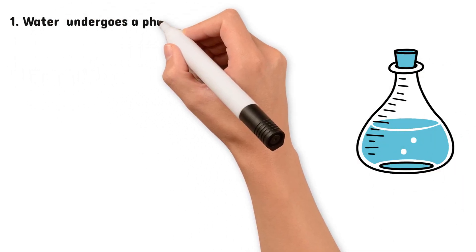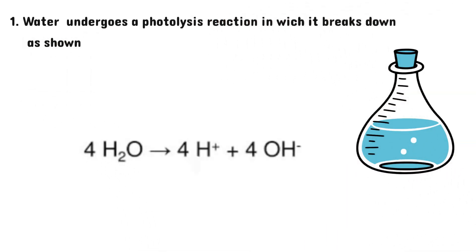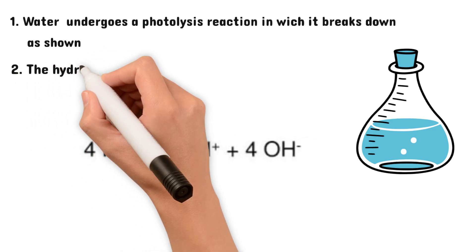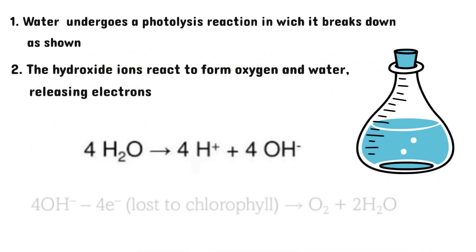So first, water undergoes a photolysis reaction, in which it breaks down as shown, into hydrogen ions and hydroxide ions. The hydroxide ions react to form oxygen, which is released as a waste product, and water. This also releases electrons.